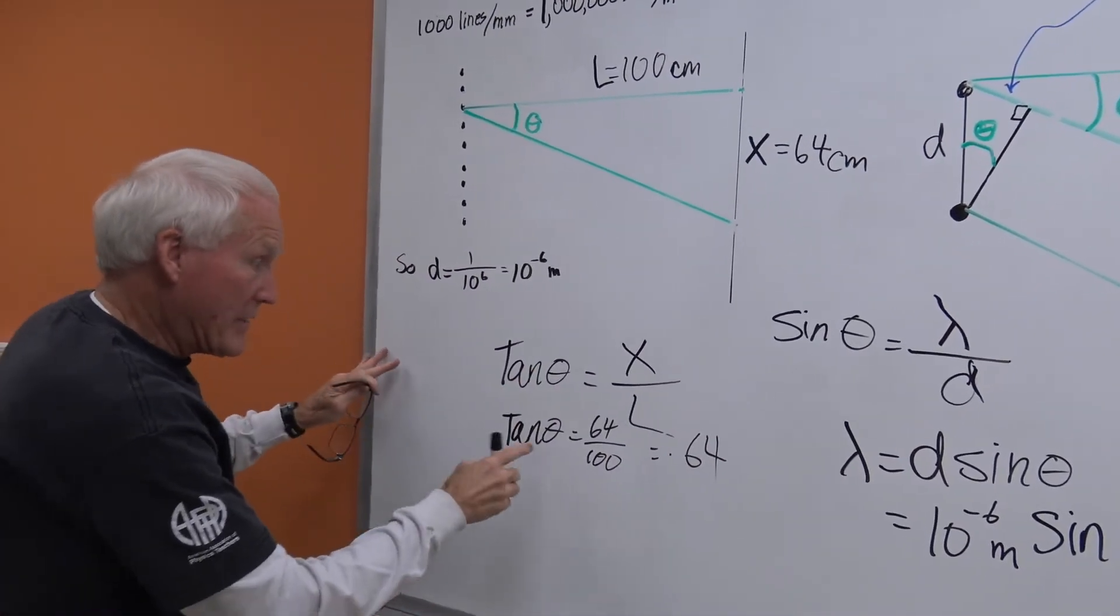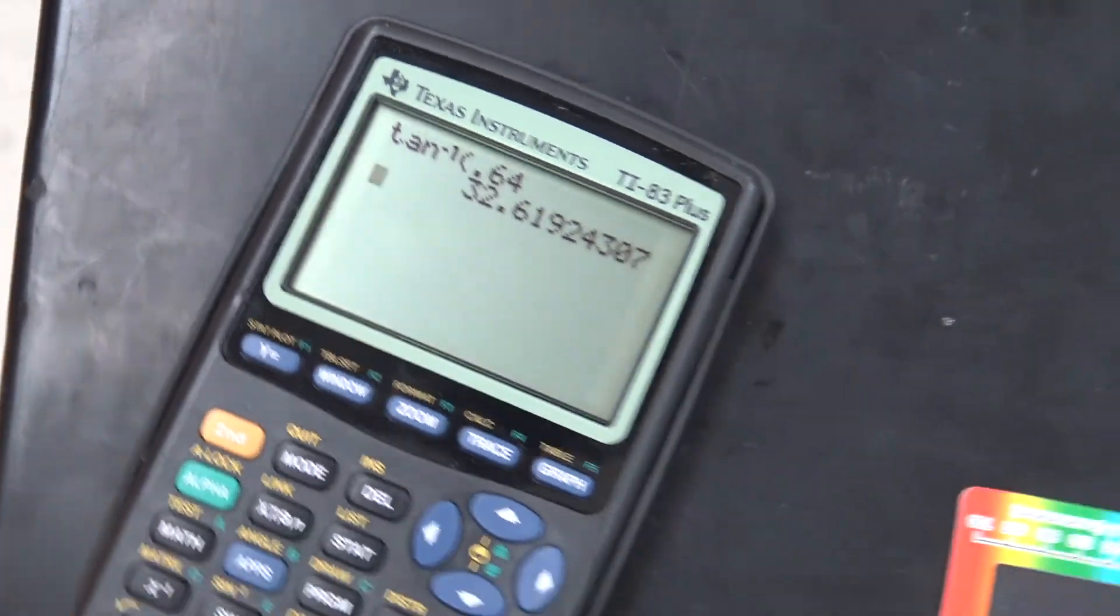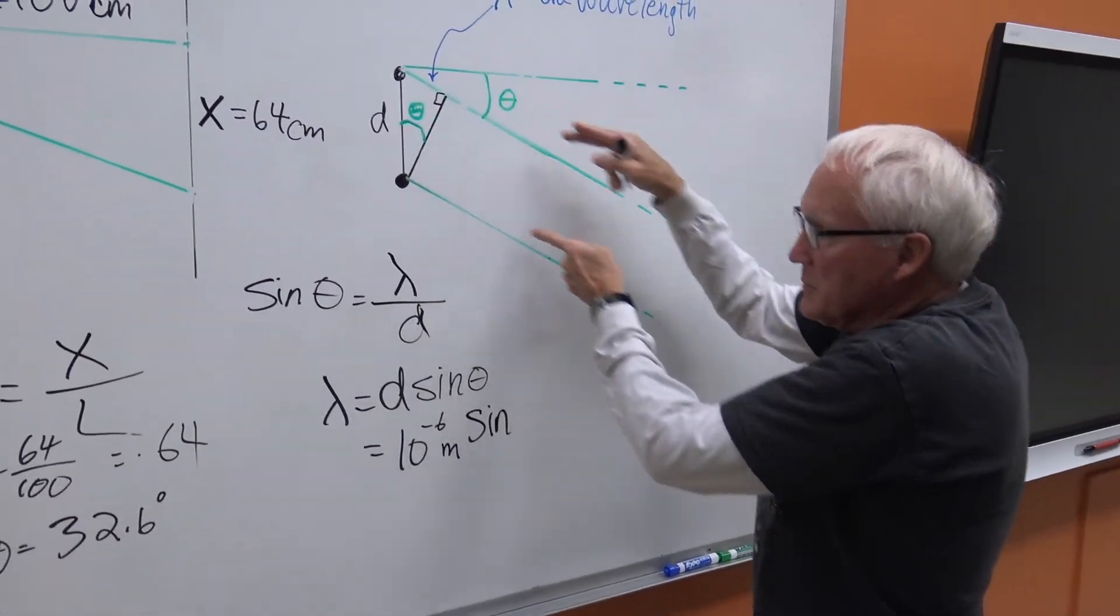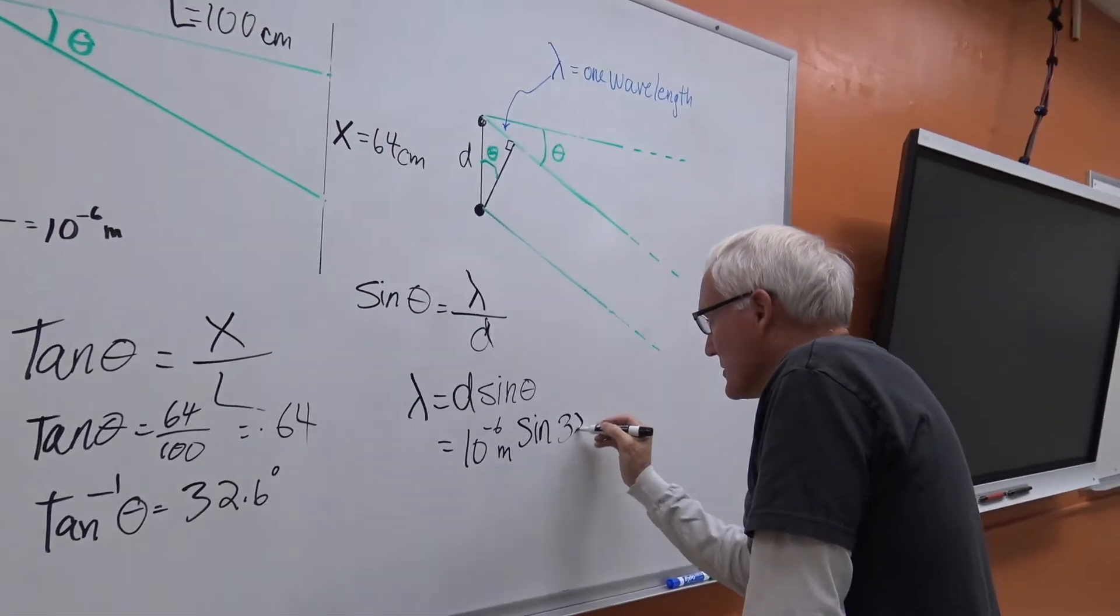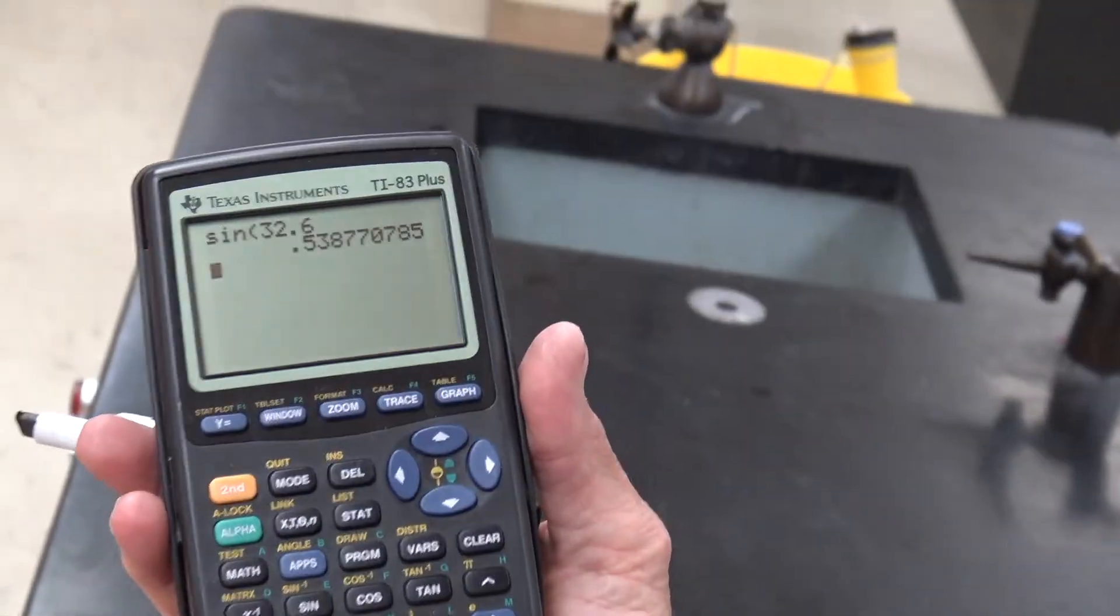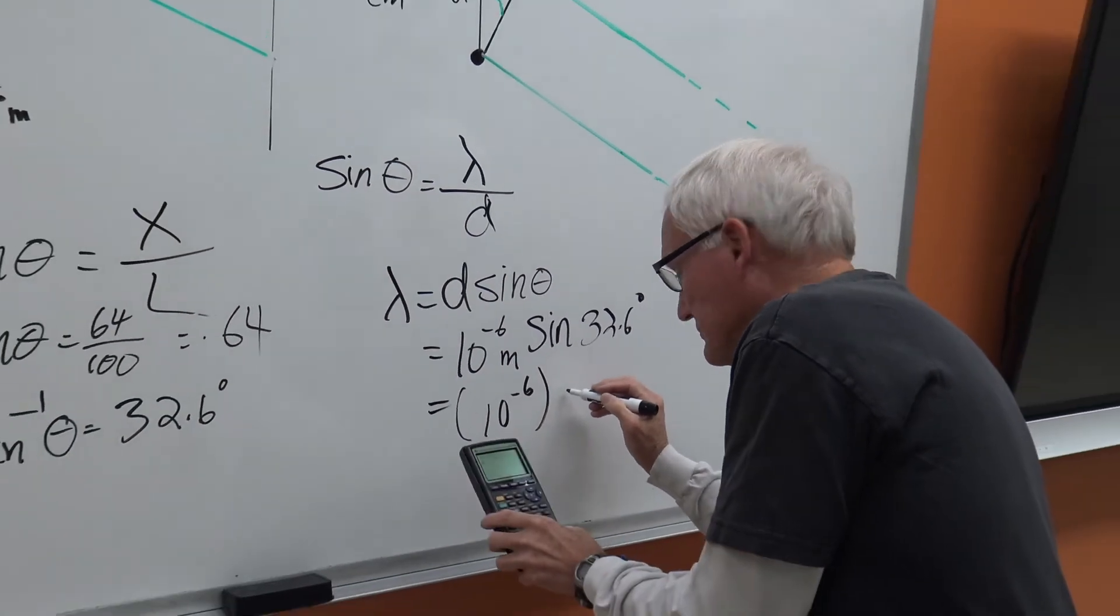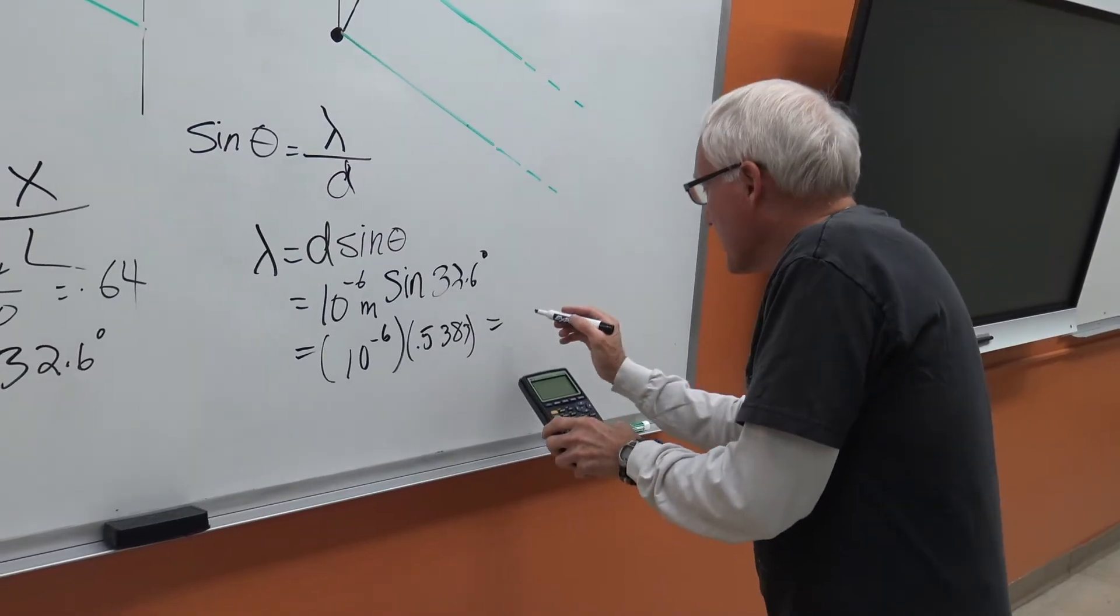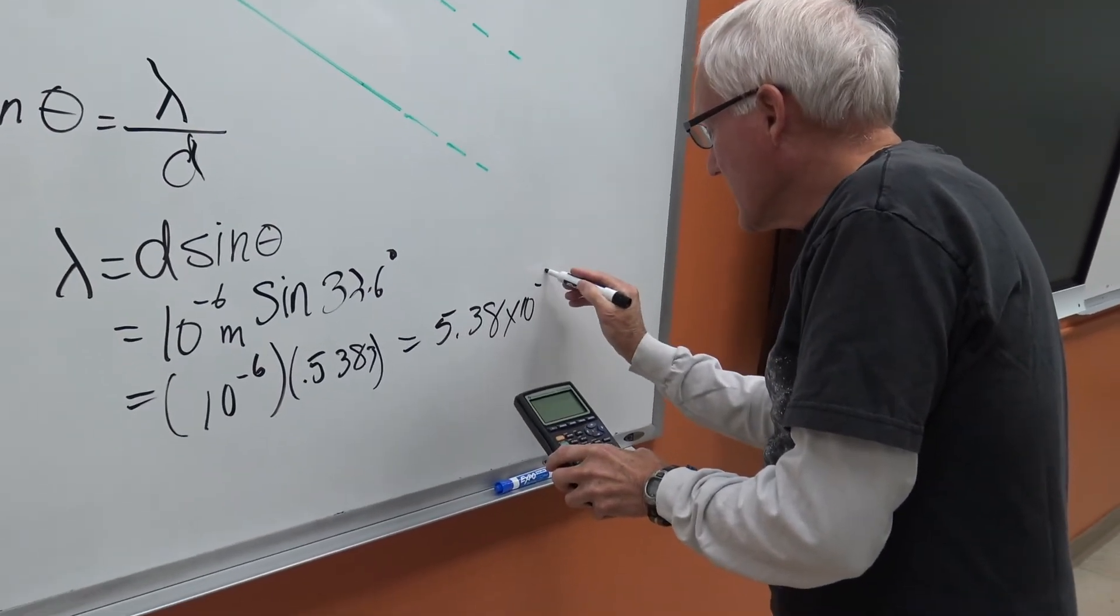And so now we need to find the angle, which means we take the inverse tangent and we get 32.6 degrees. Now we have the angle. Now we have to go back and think, remember these two light waves. One travels one wavelength further, so it's going to be the sine of 32.6 degrees. So this should give us the answer for the wavelength of that green laser light .5387. A multiplication of 10 to the minus 6 times .5387. And so we're going to get 5.38 times 10 to the minus 7 meters.